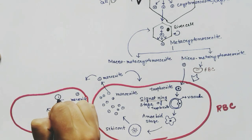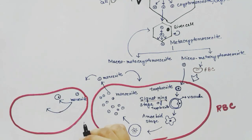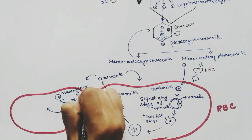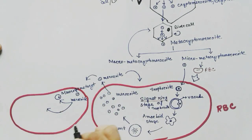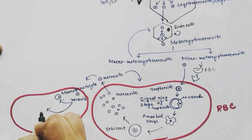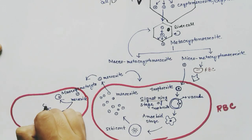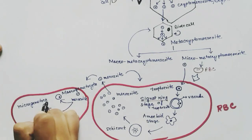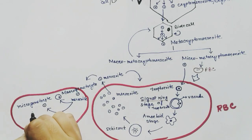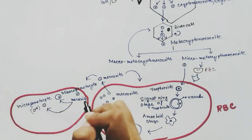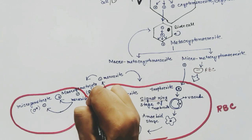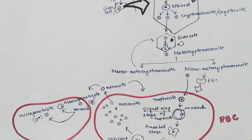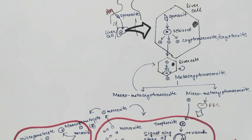The merozoite can produce two types of gametocytes: the macro gametocyte, which is the female gametocyte, and the micro gametocyte, which is the male gametocyte. However, sexual reproduction does not occur in the human body — it occurs in the body of the mosquito.